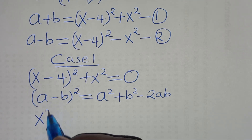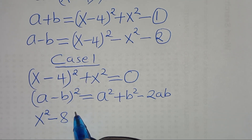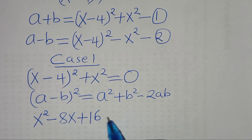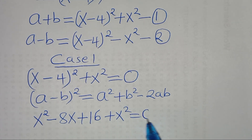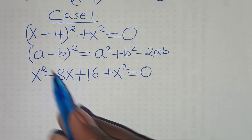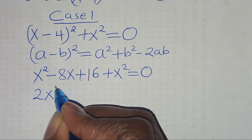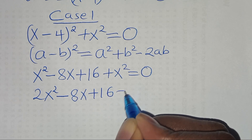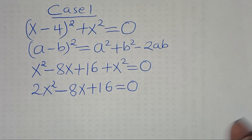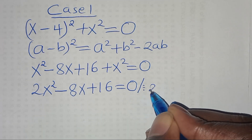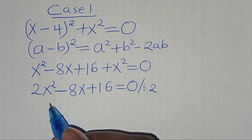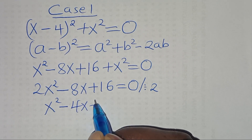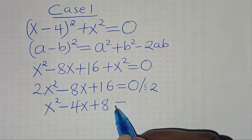This gives x² minus 8x plus 16 plus x² equals 0. Combining like terms: 2x² minus 8x plus 16 equals 0. Dividing both sides by 2 gives x² minus 4x plus 8 equals 0.